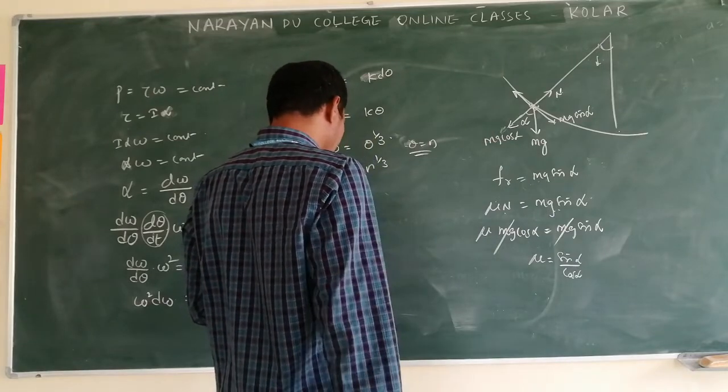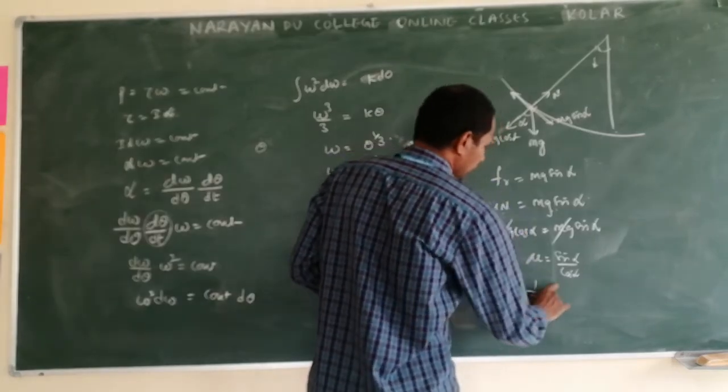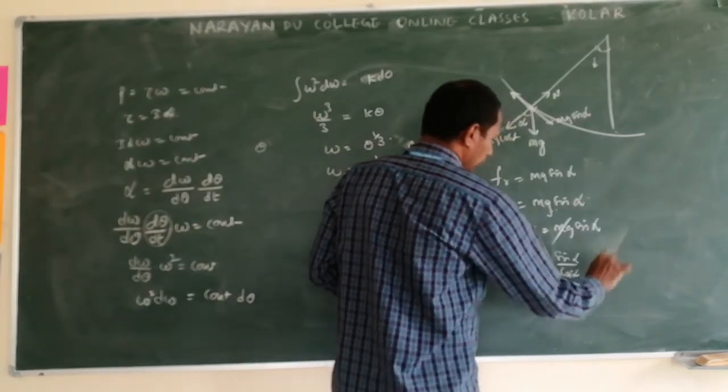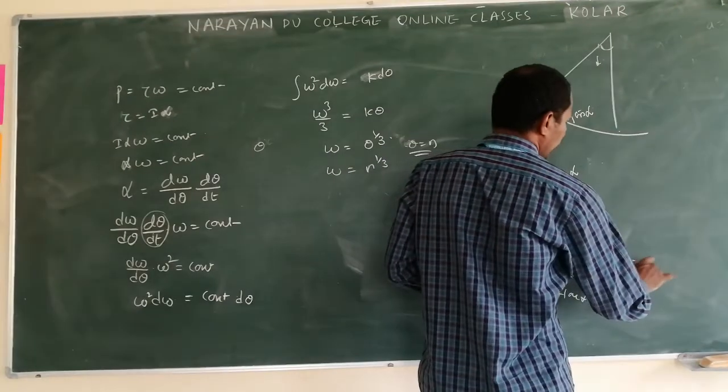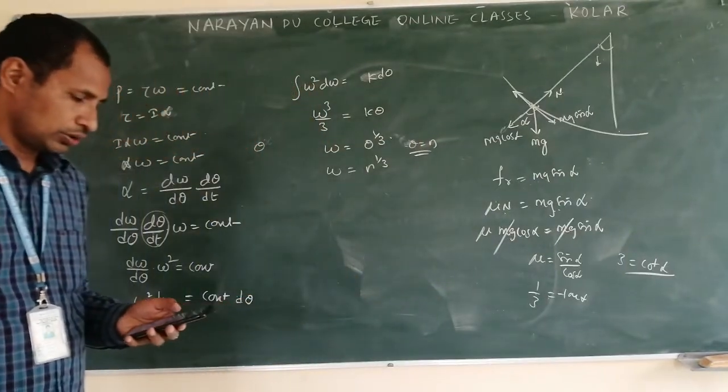Mu is equal to sin alpha by cos alpha. This mu is given as what? 1 by 3. So 1 by 3 is equal to tan alpha, or root 3 is equal to cot alpha.